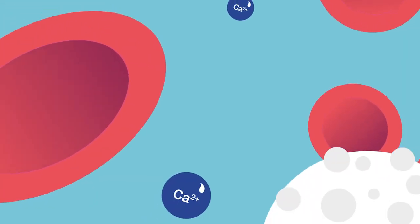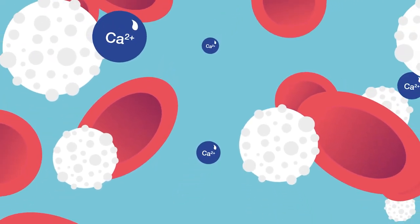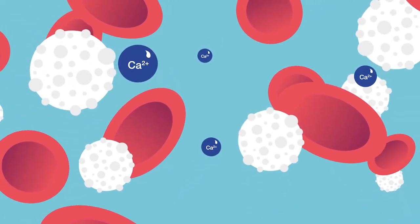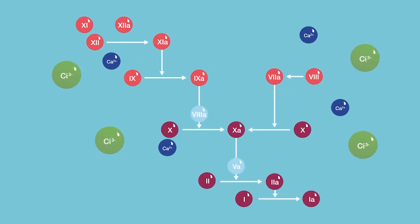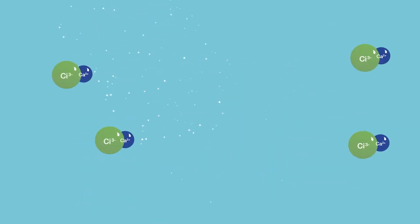Calcium ions are an important component of the physiological coagulation cascade in blood. The absence of free ionized calcium can disrupt this complex cascade.